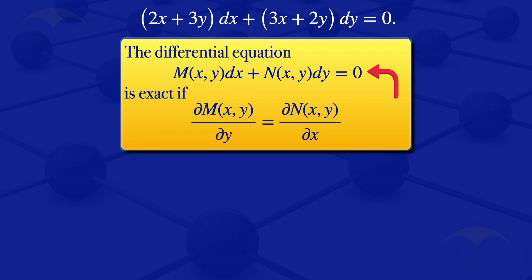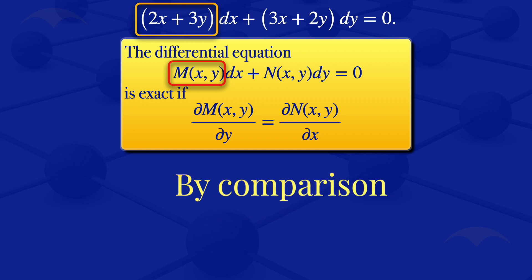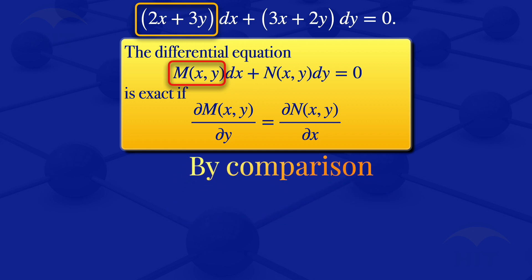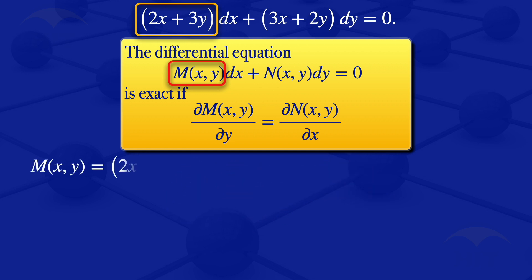we see that the coefficient of dx is M. For this equation here, the coefficient of dx is 2x + 3y. So by comparison, we see that M, which is the coefficient of dx, is equal to 2x + 3y.